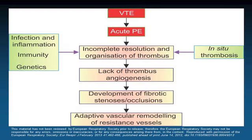The pathogenesis of CTEPH begins with an acute PE that undergoes incomplete resolution and organization. There is significant interest in the lack of thrombus angiogenesis as part of this problem. The clots become scarred, attach completely to the pulmonary vessel walls, and result in poor perfusion and adaptive vascular remodeling of resistant vessels. This process is driven by acute thrombosis but also by infection, inflammation, immunity, and possibly genetic predisposition — particularly polymorphisms in the fibrinogen gene.